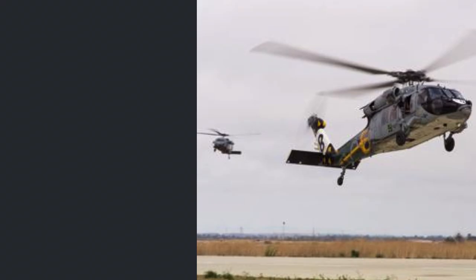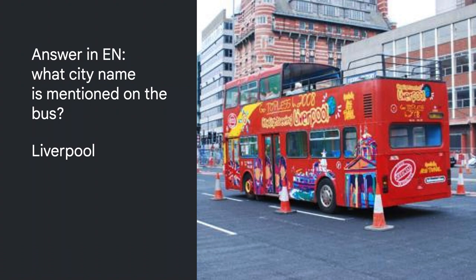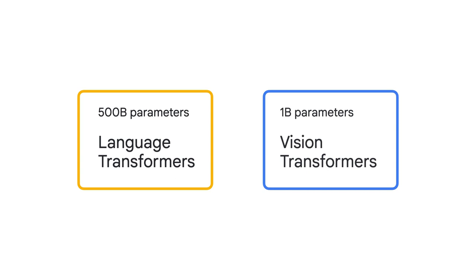Vision question answering is just one example of a task that combines vision and language, and there are many others, like image captioning and scene text understanding. One of the key challenges that guided us is that language models and vision models behave somewhat differently with respect to scale. Language models continue to show improvements with scale, up to models with 500 billion parameters, while vision models — specifically vision transformers — did not seem to improve beyond 1 billion parameters. We didn't quite believe this to be the whole story, so we started to investigate more closely.